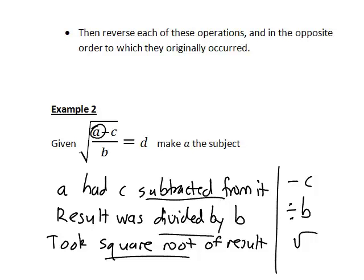First subtraction, then a division operation, then a square root operation. So again to disentangle a from all of this and get it as the subject, we need to reverse these operations.